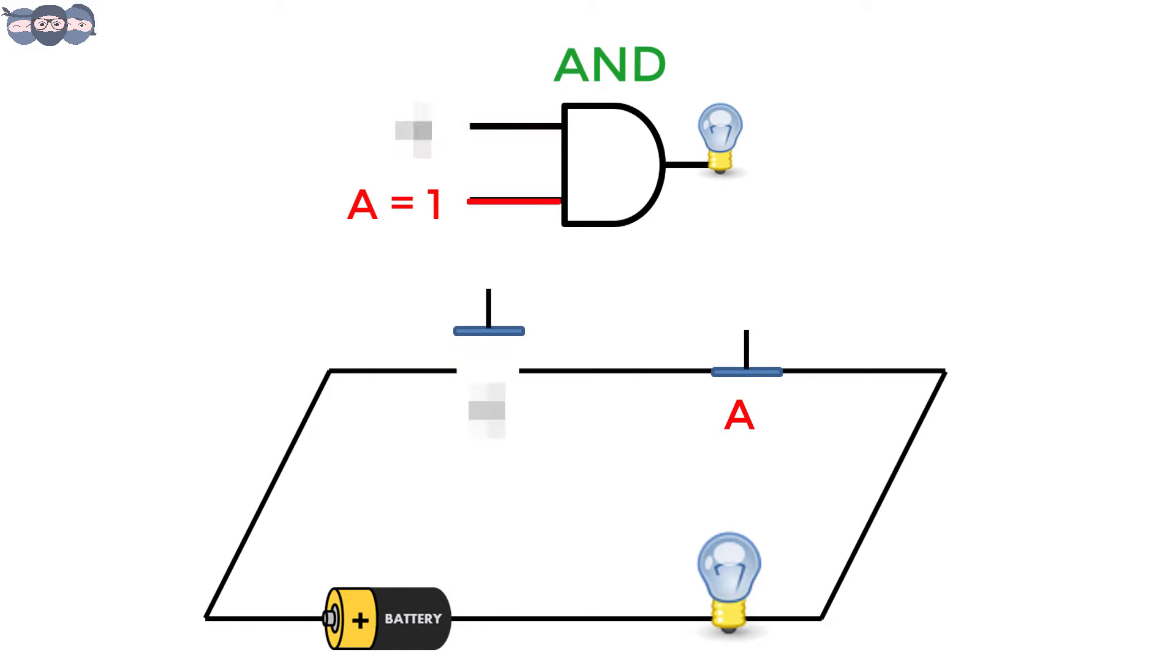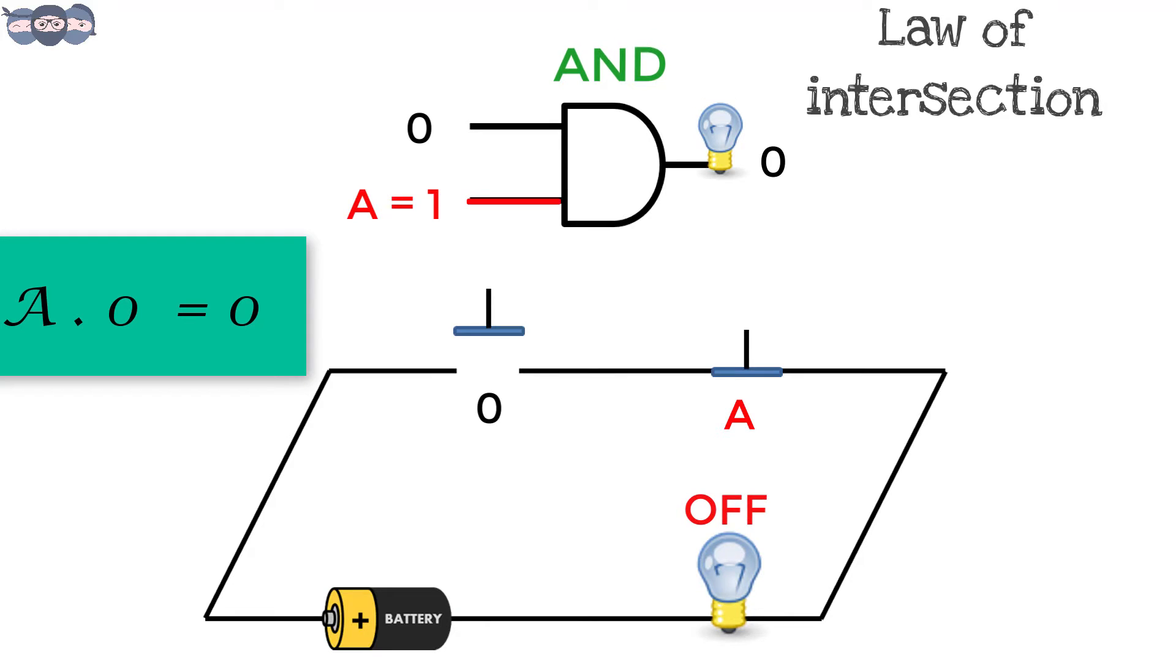However, if the first input is 0, then let the value of A be 0 or 1, the output will always be 0. The circuit will always be open. A and 0 gives 0.